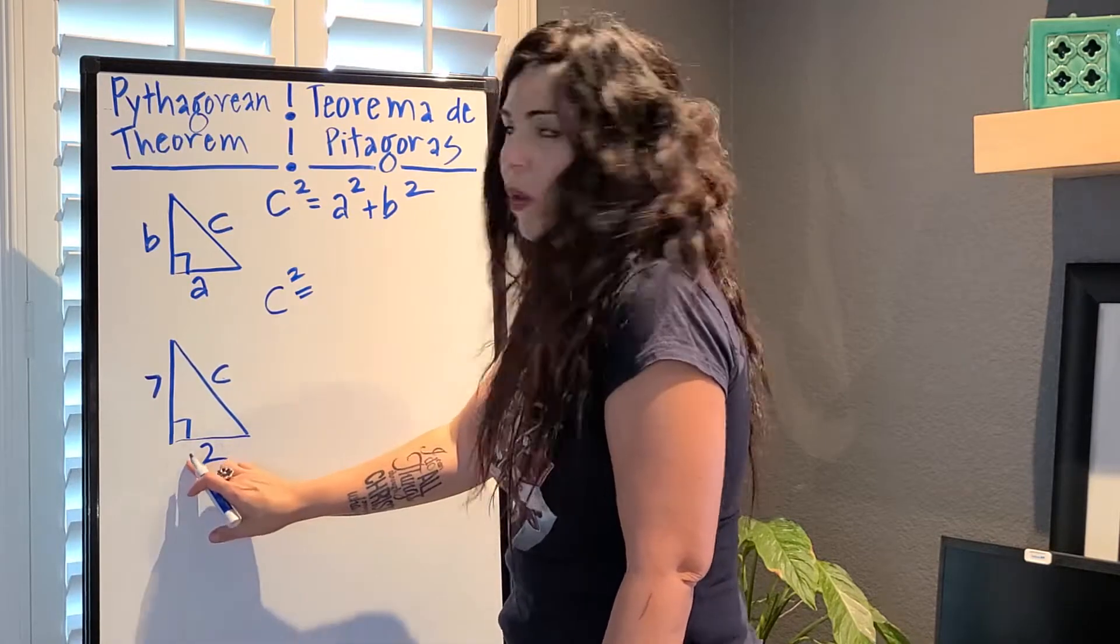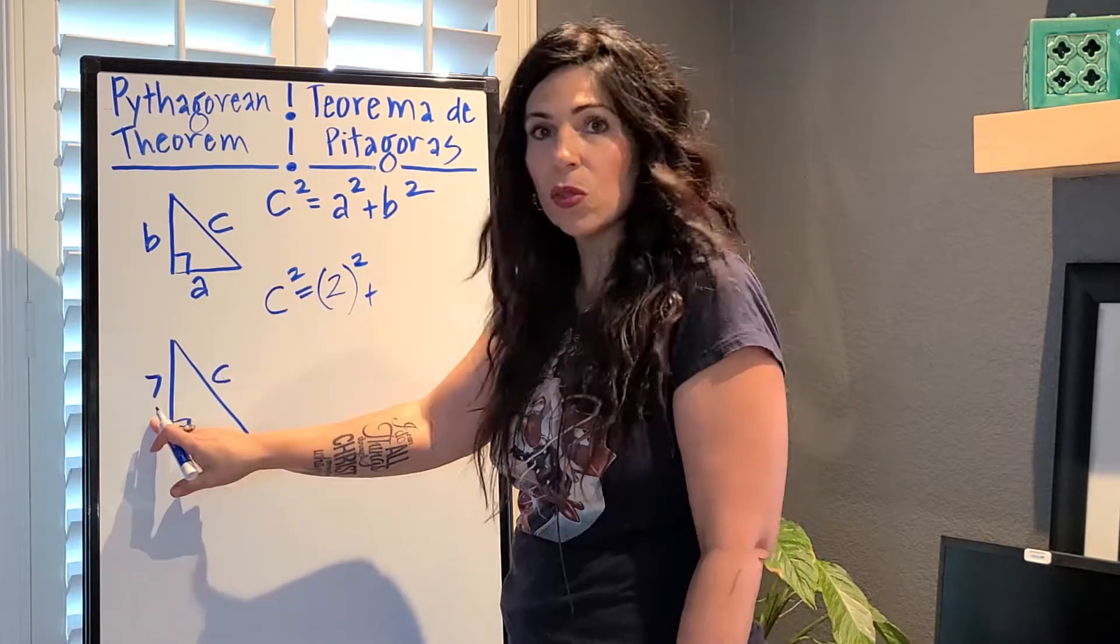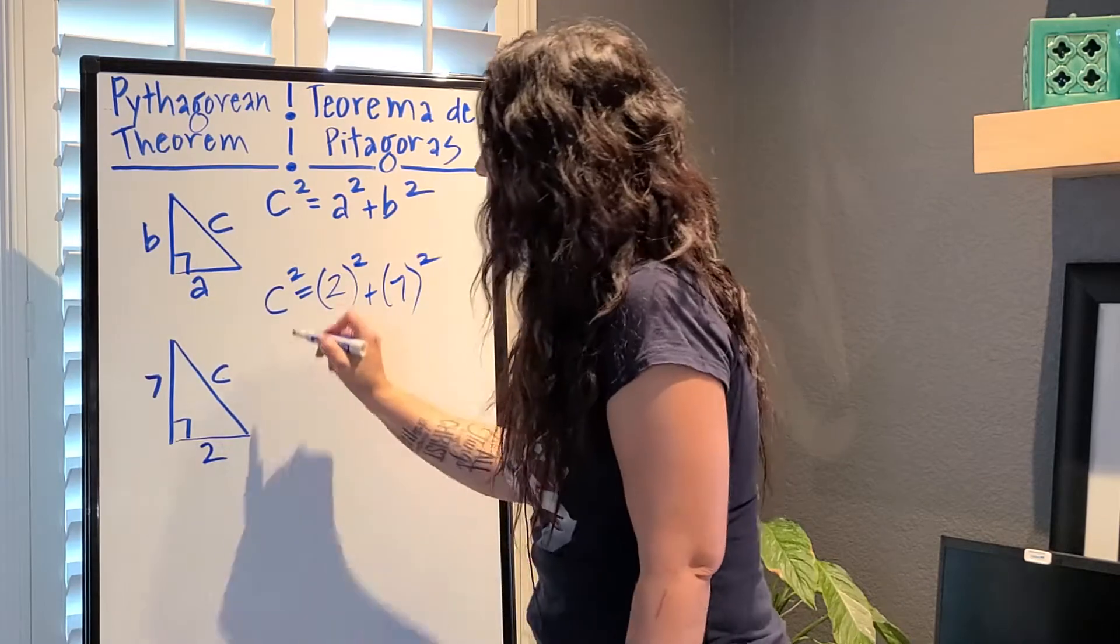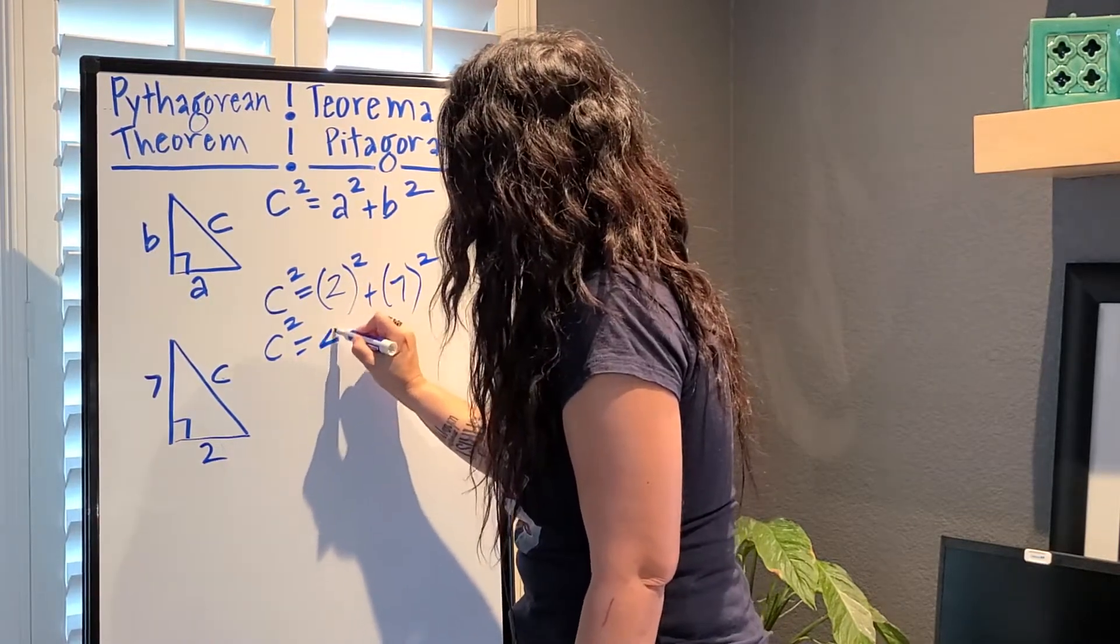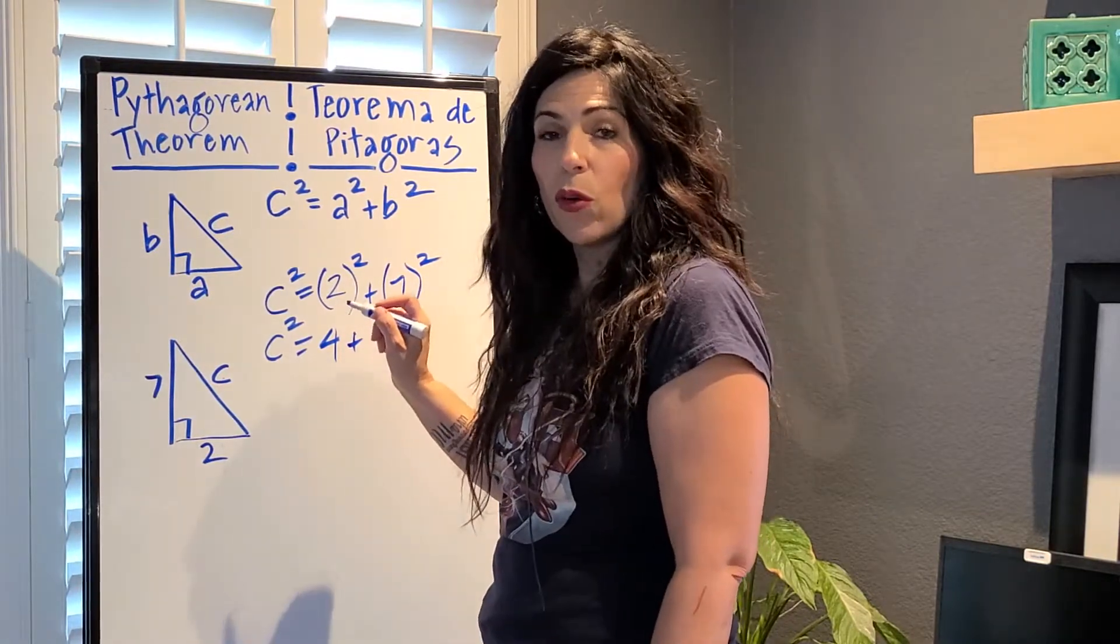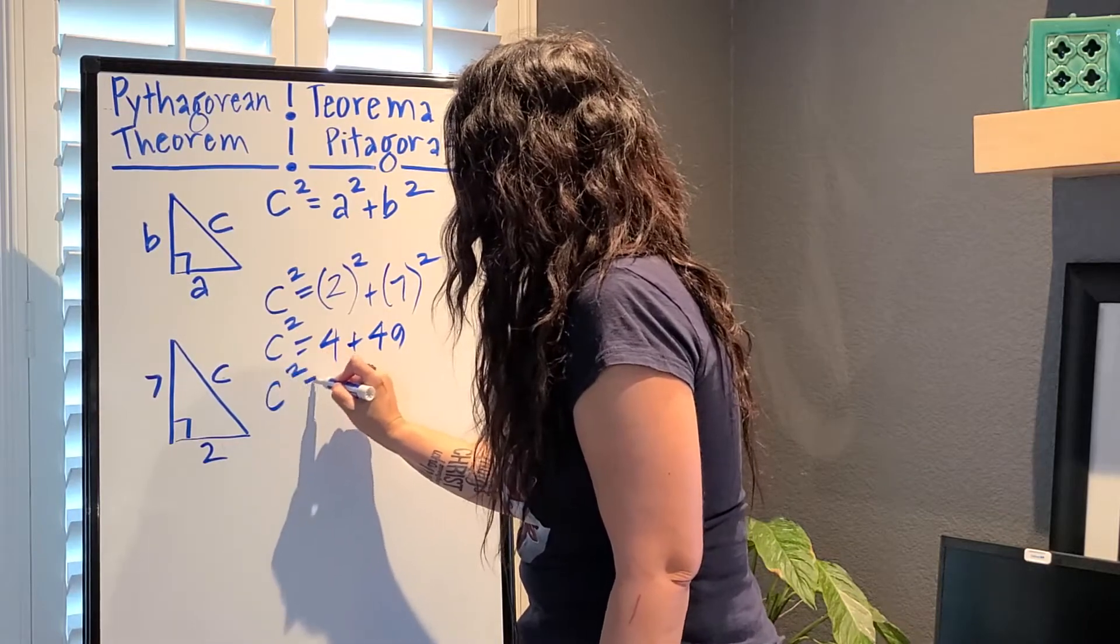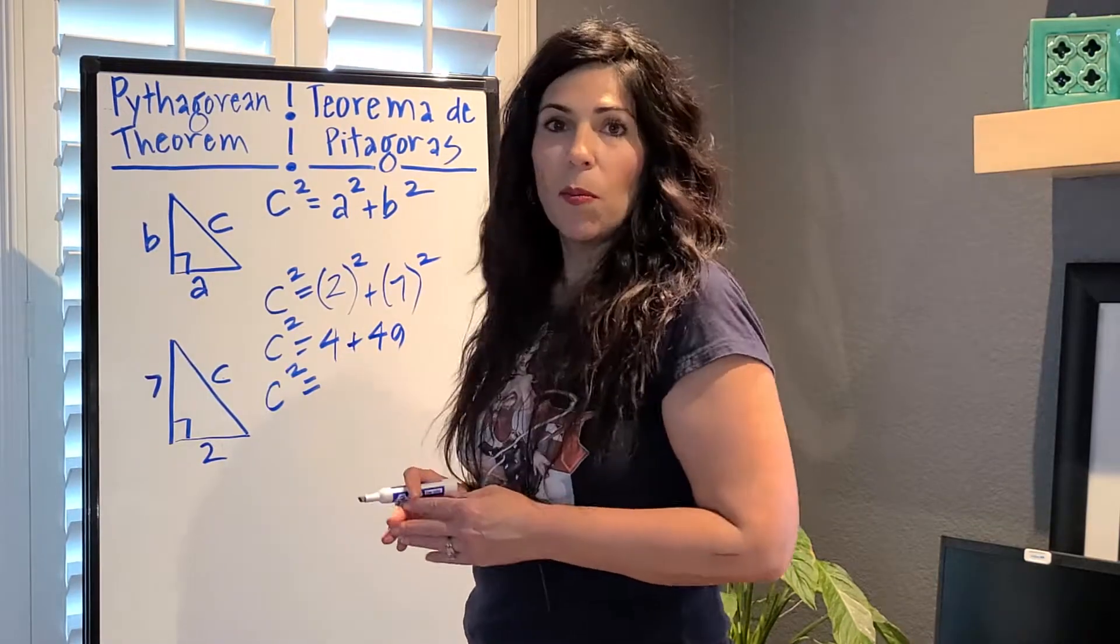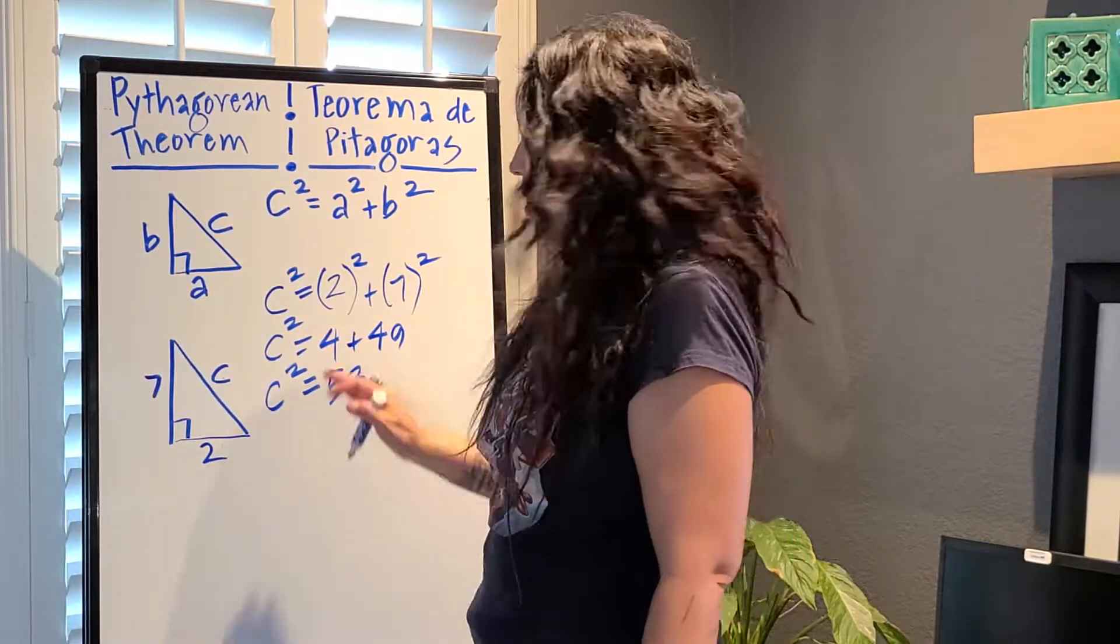So C squared is A squared. Dos al cuadrado más B squared. So plus seven squared. Entonces siete al cuadrado. So we have C squared. C al cuadrado. Dos al cuadrado son cuatro. So two squared is four. Plus seven squared. Seven squared is 49. Siete al cuadrado vale 49. So now we have four plus 49. C squared is four plus 49. Cuatro más 49 son 53. So 53 is four plus 49.